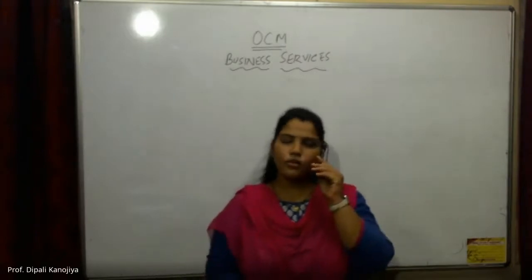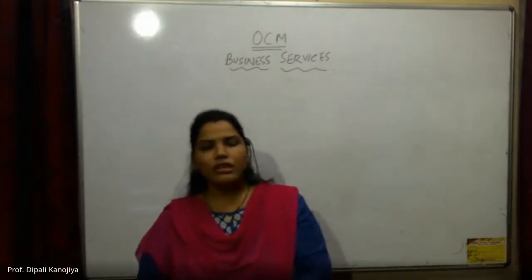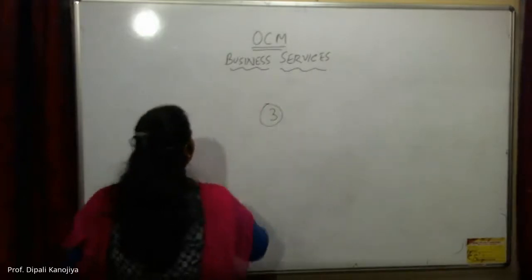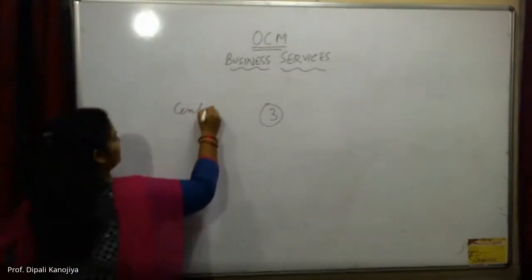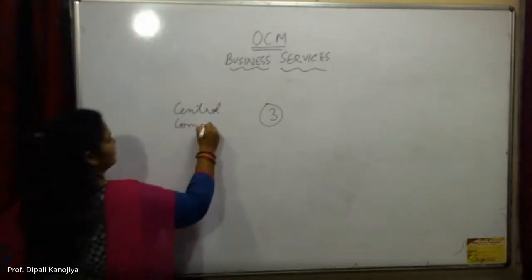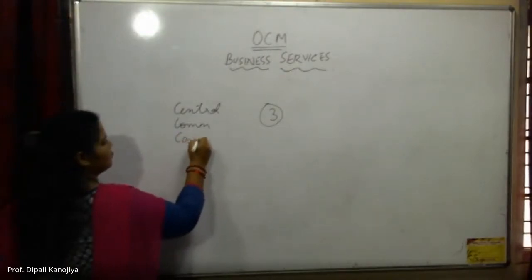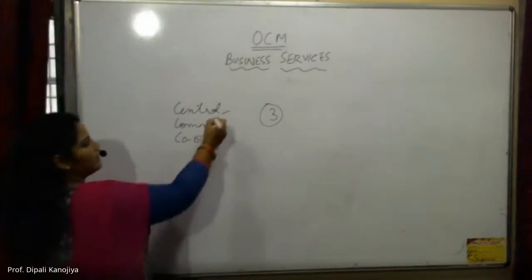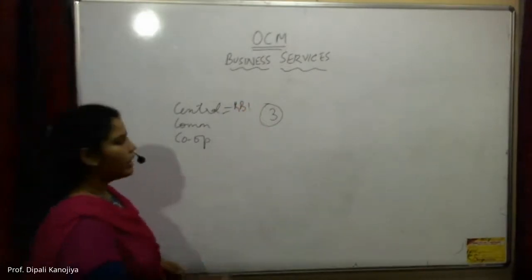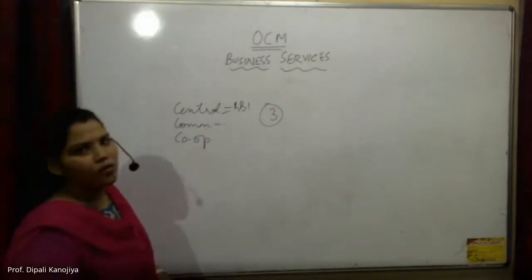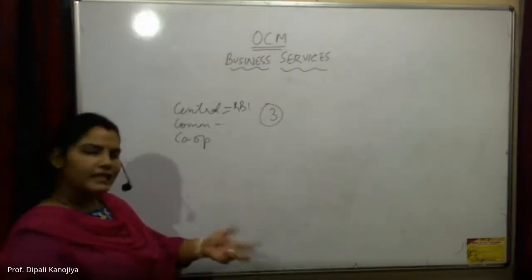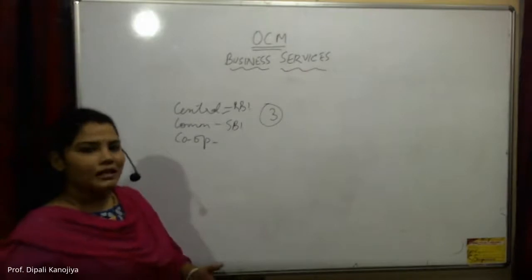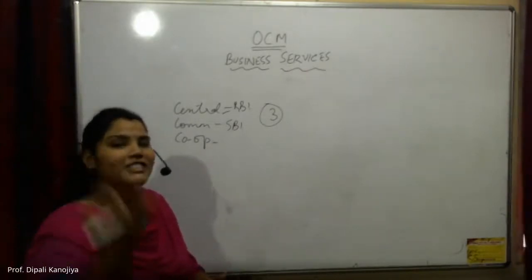Welcome back to OCM's lecture. Today we are going to learn more about types of banks. Till now we are done with three types of banks: central bank, then commercial bank, and cooperative bank. Central bank is the apex bank — RBI. Commercial banks are there for profit motive where people can deposit money and take loans, like SBI. Cooperative banks are there for service motive, to give services to people.